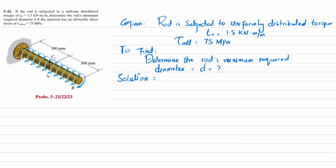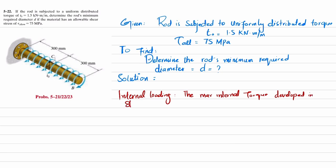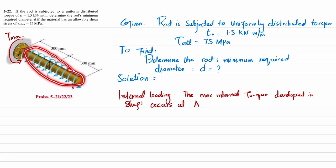Let's start with the solution. The first step we will apply is internal loading. The maximum internal torque developed in the shaft occurs at the fixed end, because at that point there will be a reaction torque opposite to the applied torque, and that reaction torque will be equal to the maximum torque. To find this, we convert the uniformly distributed torque into a net torque.